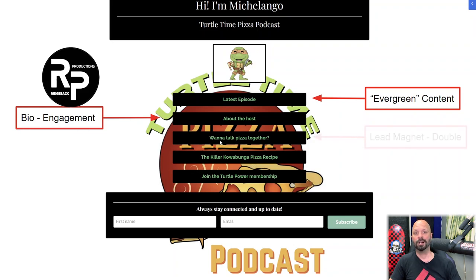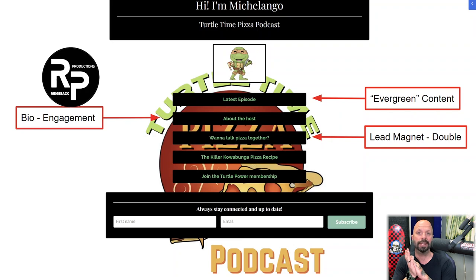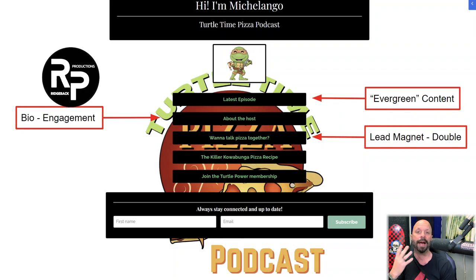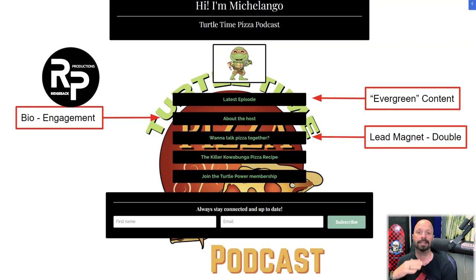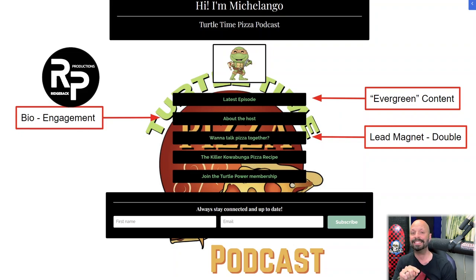The next link is 'want to talk pizza together' — that's just what I called it. Essentially it's your link to have them be a guest on your show. This is a lead magnet that is a double lead magnet. The reason it's a double lead magnet is it does two things: one, it's benefiting you because when they sign up to be on the show, you're going to capture their name and email address so you can market to them later.